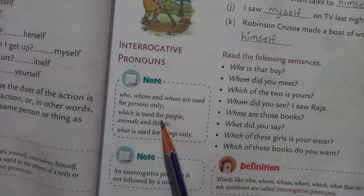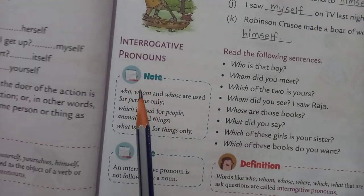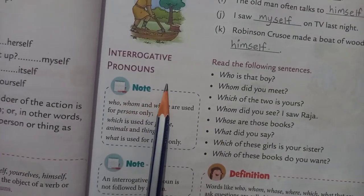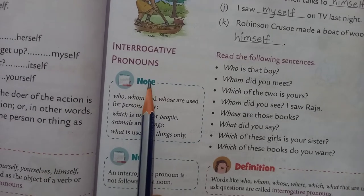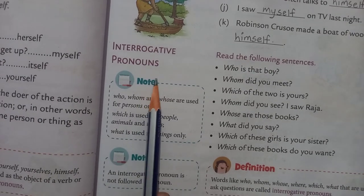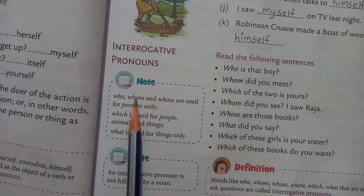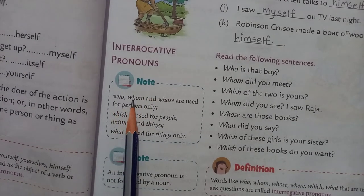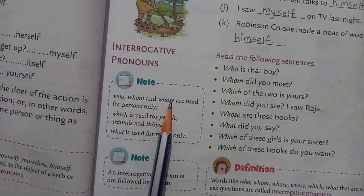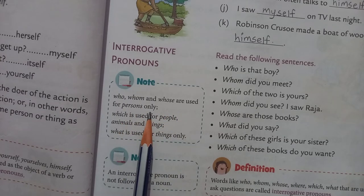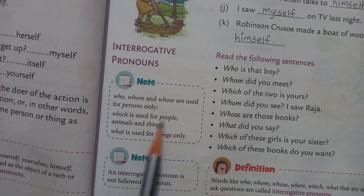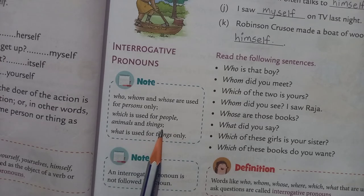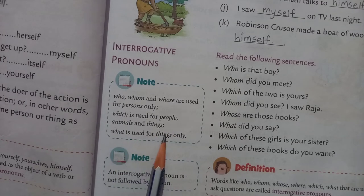Now, Interrogative Pronouns. Interrogative means questions — used for asking questions. Who, whom, and whose are used for persons only. Which is used for people, animals, and things. What is used for things only.